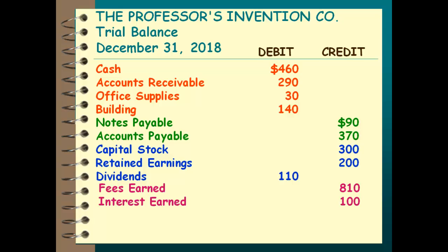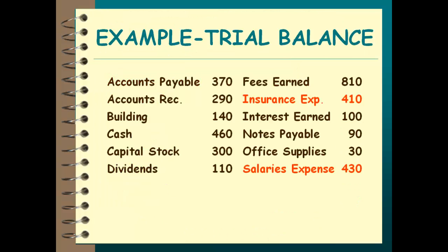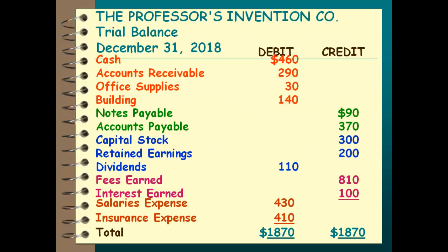'All lawyers can dodge rotten eggs' — what comes last? Expenses. We have insurance expense and salaries expense. Your book will list these largest to smallest, but always puts miscellaneous last. Then we stop and add them up — it's the moment of truth. We add up the debits, we add up the credits. Hopefully, the amount of my debits equals the amount of my credits. You ought to get $1,870 for both your debits and your credits.